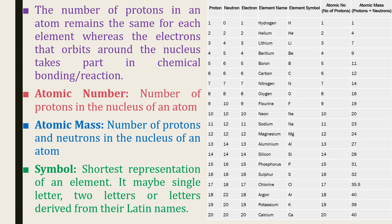The number of protons in an atom remains the same for each element, whereas electrons that orbit around the nucleus take part in chemical bonding or reaction. The number of protons in the nucleus of an atom is termed as its atomic number. The number of protons and neutrons in the nucleus of an atom is termed as its atomic mass.